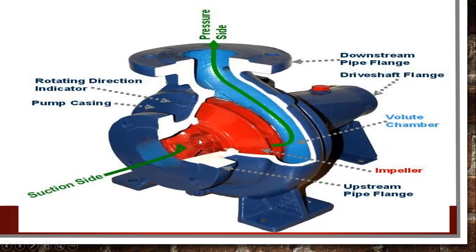This is the actual view of the centrifugal pump. This is the suction side. This is the upstream pipe flange and this is the impeller — a closed impeller. Between these two plates there are the guide vanes. This is the volute chamber, where pressure is created in the water and the water is delivered through the delivery pipe.